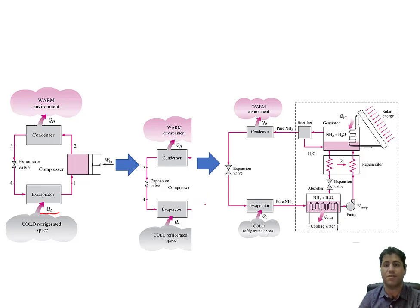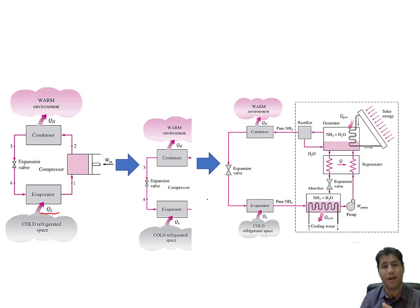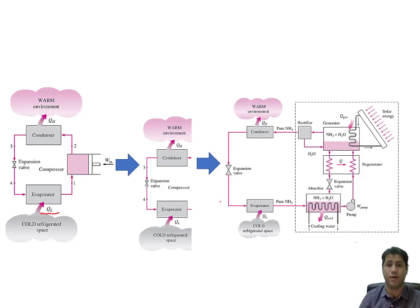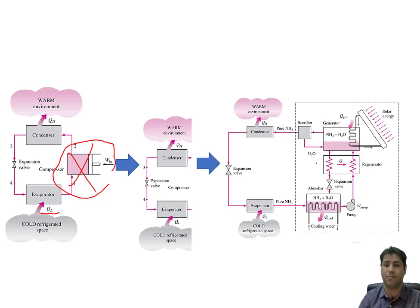In the absorption refrigeration system, we use special working fluids whose phase can be changed using a heat source — by increasing their temperature — rather than direct mechanical compression. The only difference between ARS and the vapor compression cycle is the compressor part. We remove the compressor and replace it with a box. The rest of the cycle is similar to vapor compression.